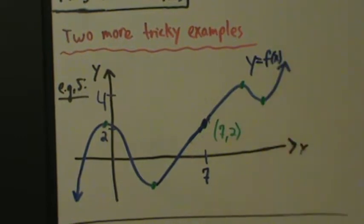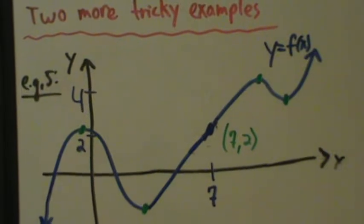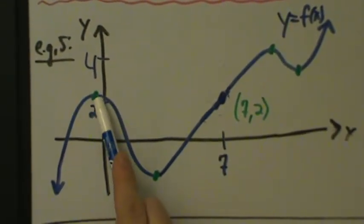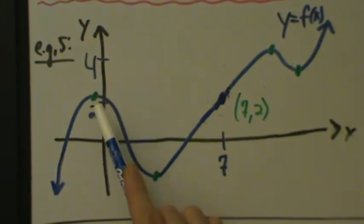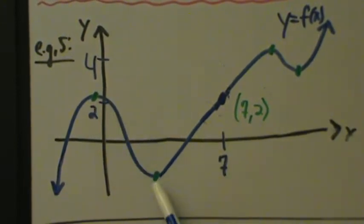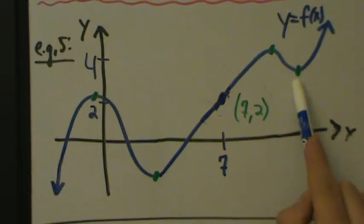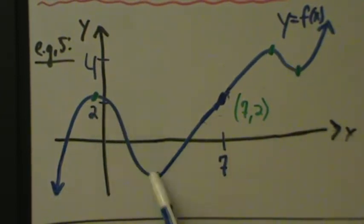First of all, let's zoom in just a bit. There is a local max right here — it's not labeled because it's not important for what we're going to talk about. Local min right here, same thing, not labeled. Local max and a local min again, not labeled. So this, this, this, this — pretty straightforward.